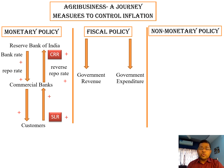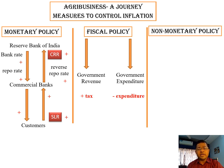In fiscal policy, the government has two instruments in its hand — one is revenue and the second is expenditure. The government controls its revenue by increasing tax, meaning it increases corporate tax, excise duty, and industrial licensing for different types of investment undertaken by private players. Private players find difficulty in getting money for their own investment, which ultimately checks inflation.